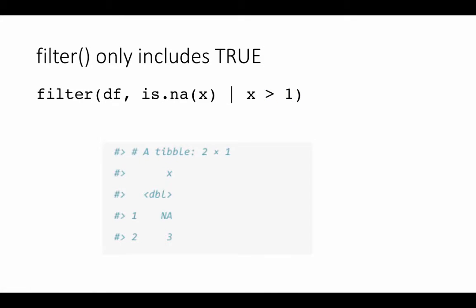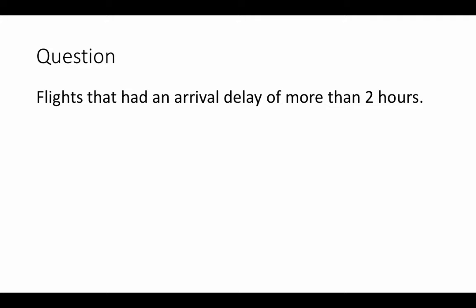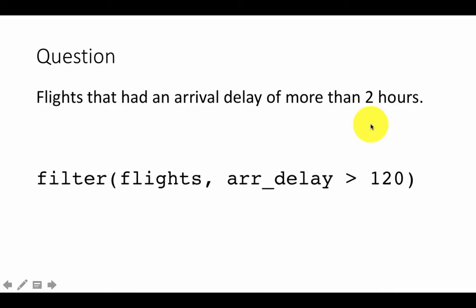Let's look at some examples. How can we find the flights that had an arrival delay of more than 2 hours? In this data frame, the arrival delay is recorded in number of minutes. So we can filter by arrival delay greater than 120: filter(flights, arr_delay > 120). That's 2 hours because the arrival delay is recorded in minutes.